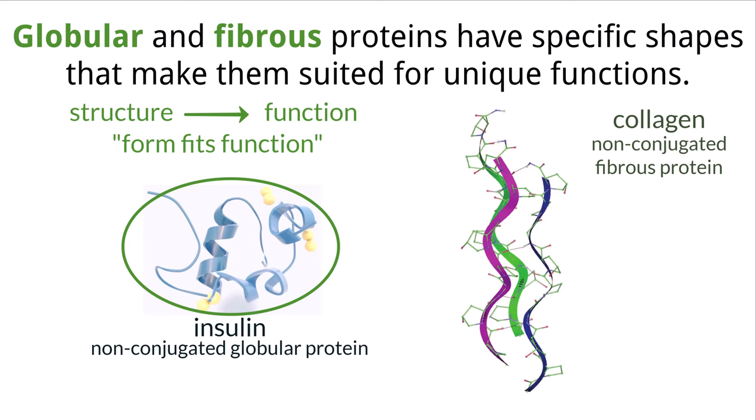This makes the structure very stable and allows it to create a conformation that can easily move around and bond with insulin receptors, sending important signals that help with controlling blood sugar levels. Collagen, on the other hand, is a fibrous protein and has amino acid chains that create long rope-like structures.